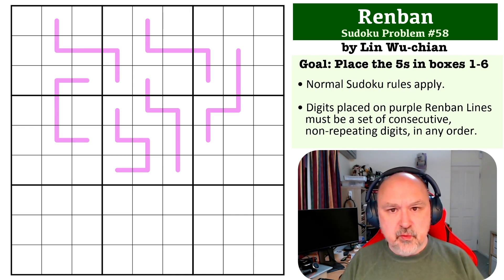The way Renbans work is all of the purple lines have to contain a set of consecutive non-repeating digits in any order, and you must place all of those fives. There's a link below to where you can try this. I'm going to leave it for a few seconds and then I will come back to explain how this one works.